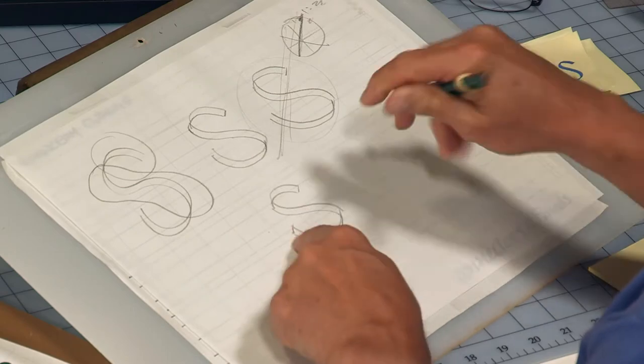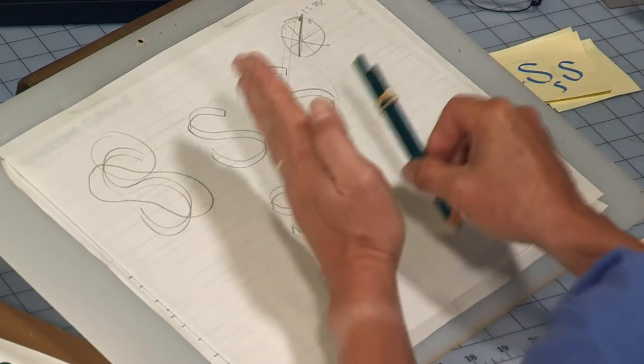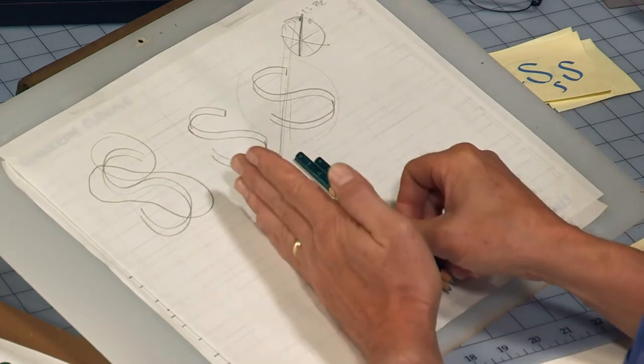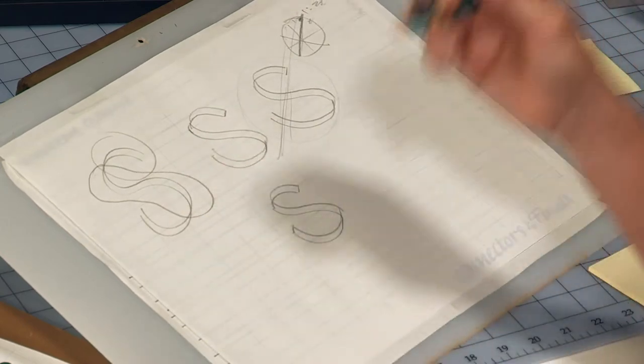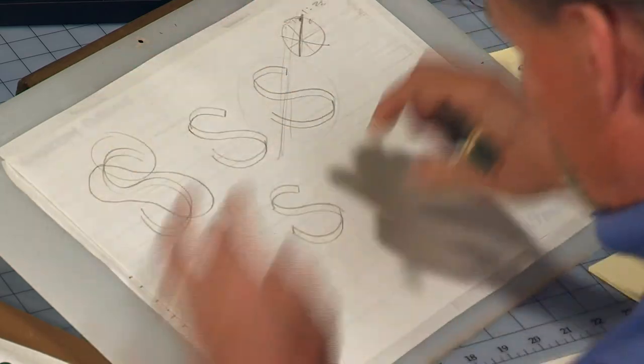The problem with this very nice, attractive s is that it's not at the right angle. My italics goes this way, and this is either vertical or actually leans a little bit back.